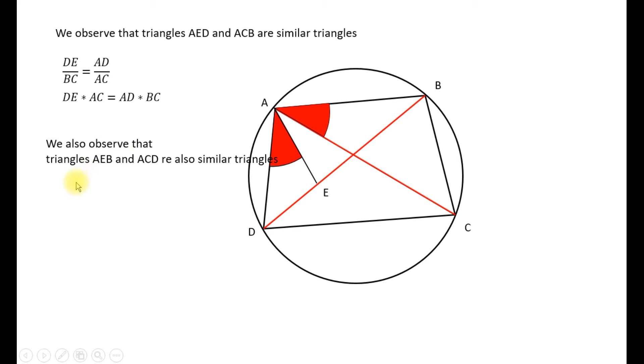We also now notice that the triangles AEB and ACD are similar. It takes a little bit of deliberation to see this but these two are similar because this angle here ABD is equal to ACD because they are inscribed angles looking at the same arc AD in the circle.